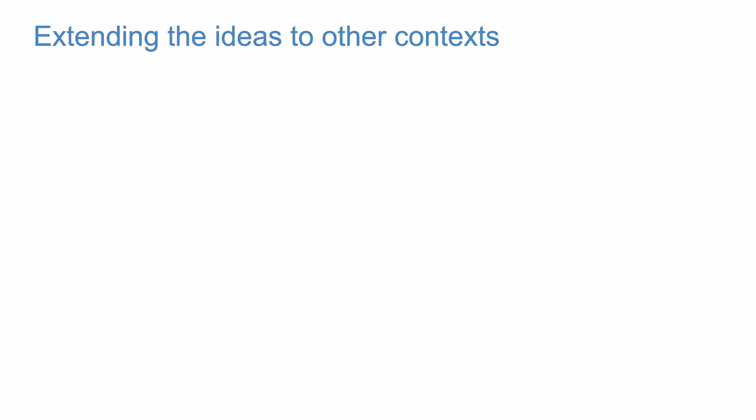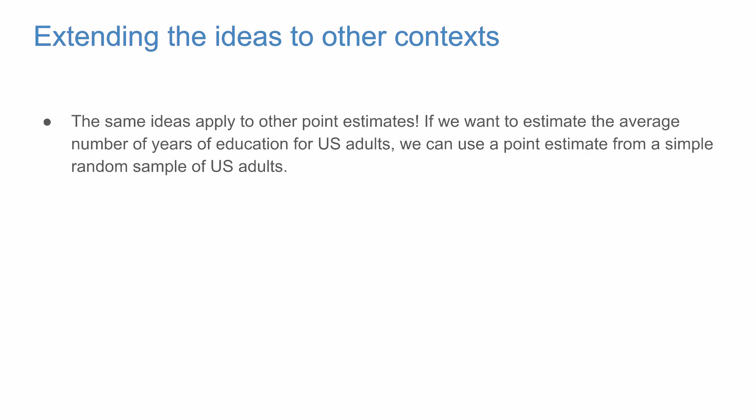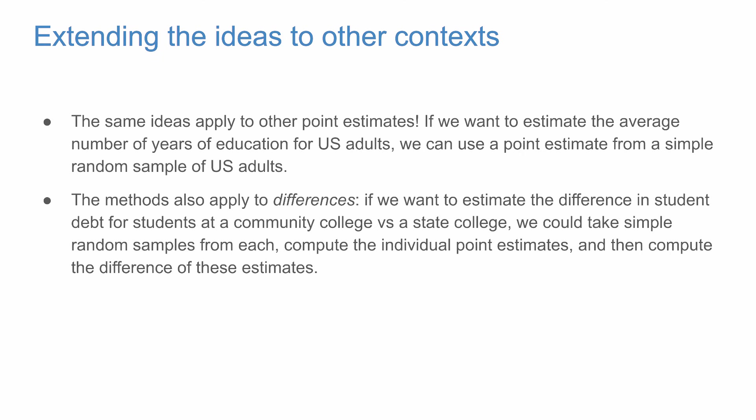One last idea to emphasize: what we've discussed in this video extends to other estimates as well. For example, to estimate the average years of education of U.S. adults, we could take a sample and compute a point estimate. Point estimates also apply to differences — to estimate the difference in student debt between community college and state college students, we take simple random samples from each, compute individual point estimates, and take the difference as our overall point estimate.